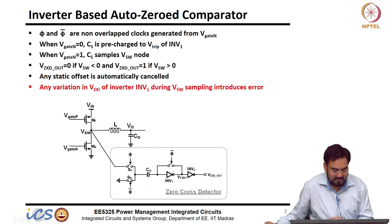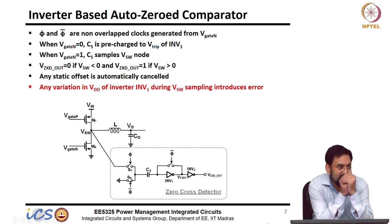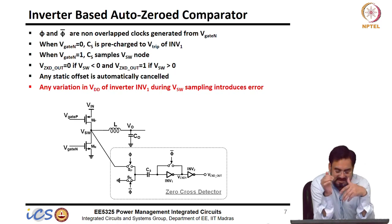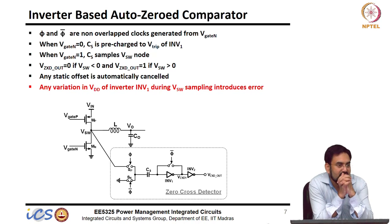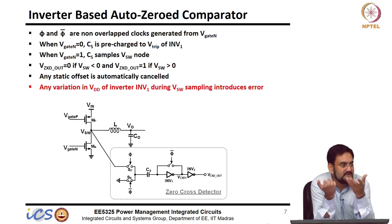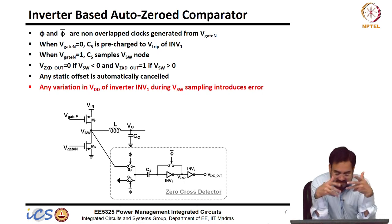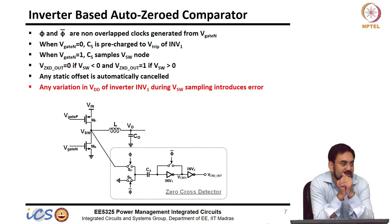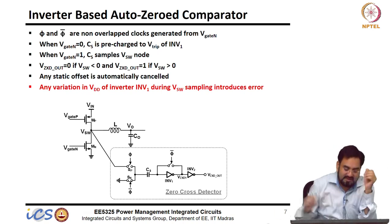Look at this one — this is nothing but an inverter. An inverter can be used as a comparator. Think about it: inverters have a certain threshold, let us say Vdd/2. If your input is more than Vdd/2 your output will be 0, and if it is less it will be high. So it can be used as a comparator, but only around that trip point — you cannot use any other input level.